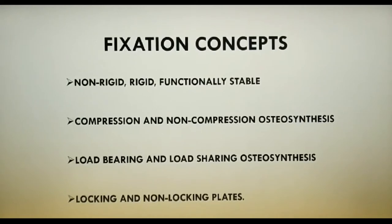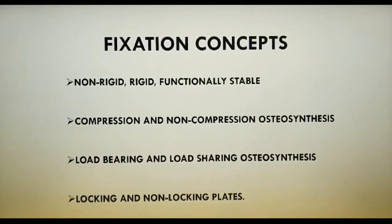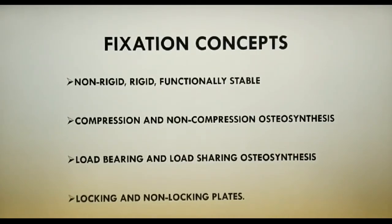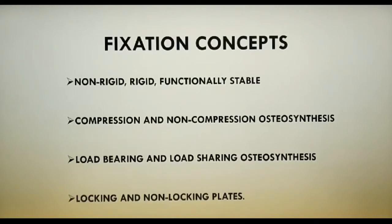Non-rigid fixation needs an additional support like IMF to stabilize the fragment. All techniques discussed earlier on osteosynthesis with IMF — like transosseous wiring, circumferential wiring, and K-wires — fall under the category of non-rigid fixation. The third entity is functionally stable fixation, where there is adequate stability to allow function of the skeletal structure even though it doesn't allow direct bone union. The fixation is not as rigid as rigid fixation, but functional load can be applied without a period of IMF or immobilization. Primary bone healing takes place with rigid fixation, whereas secondary bone healing with callus formation takes place in functionally stable fixation.